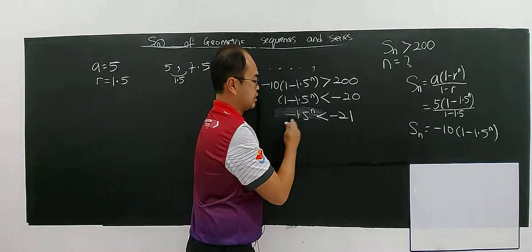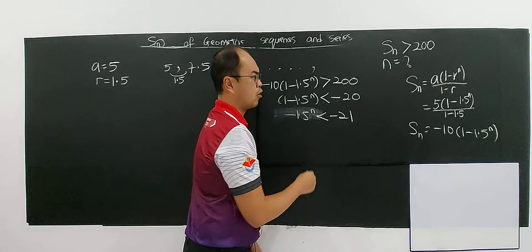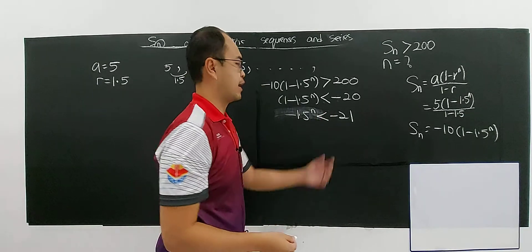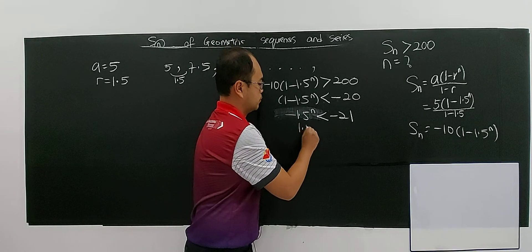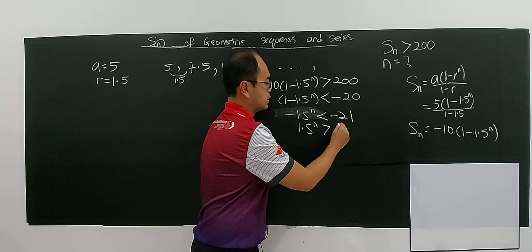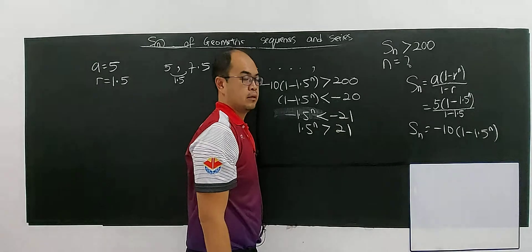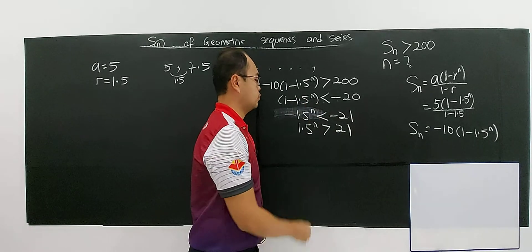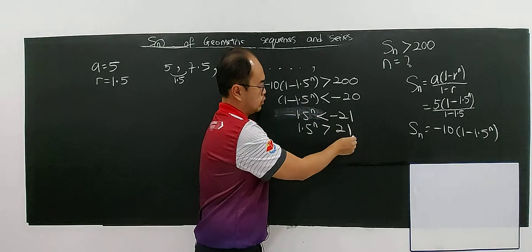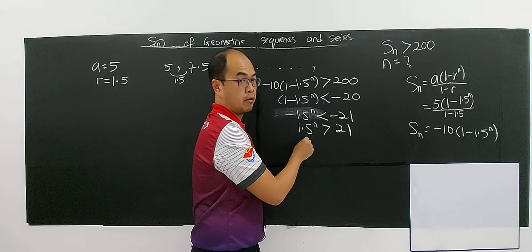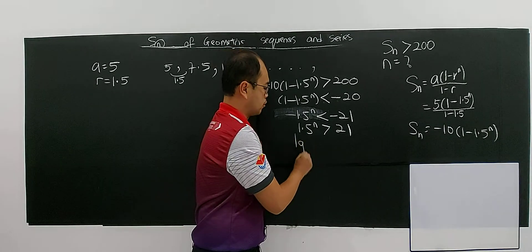So again, you divide both sides by negative 1 or you multiply both sides by a negative number. So again you have to change the sign. Be careful. So now 1.5^n greater than 21. Of course the smallest base is not 1.5, so you have to put log both sides.